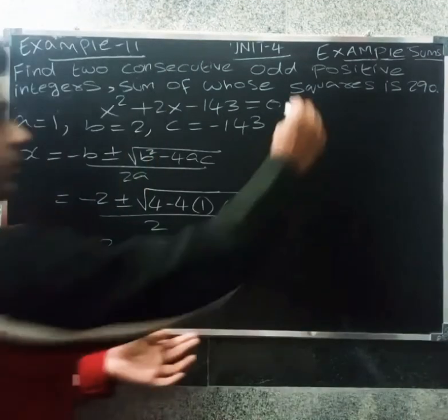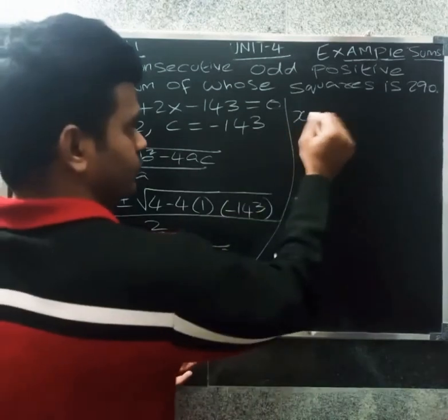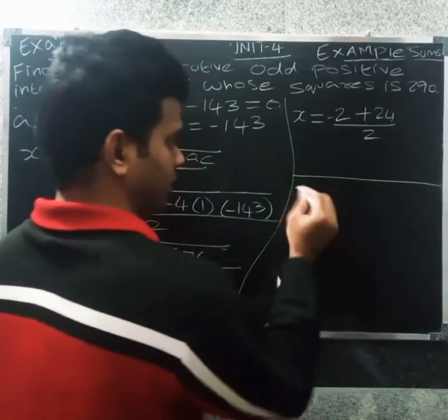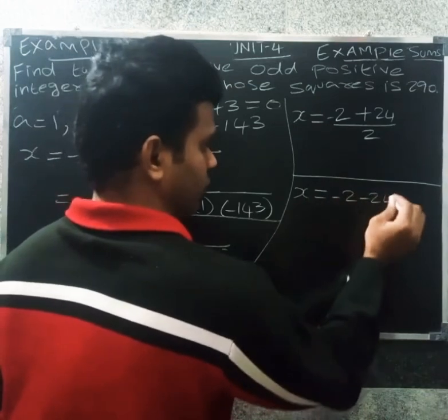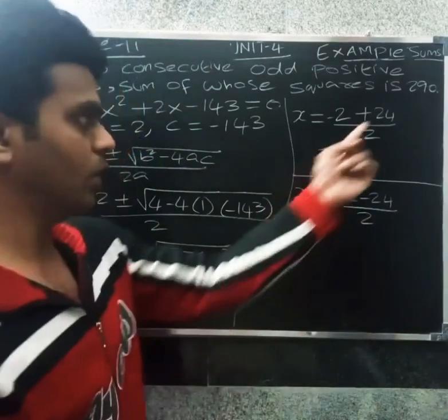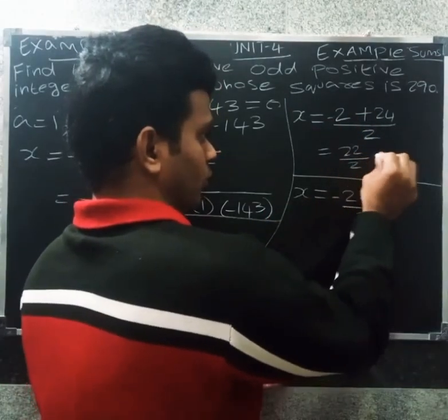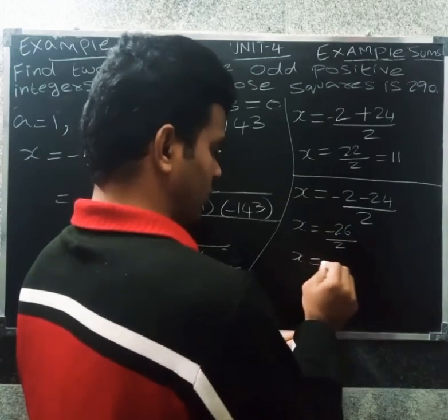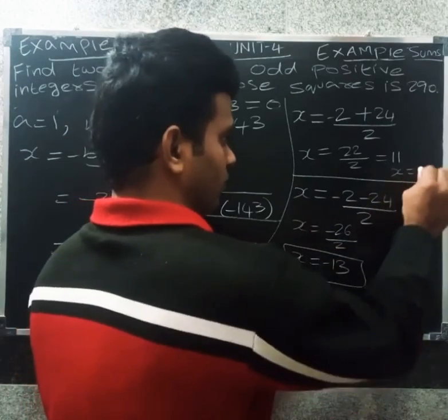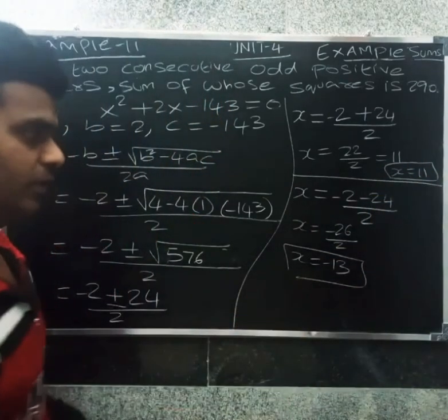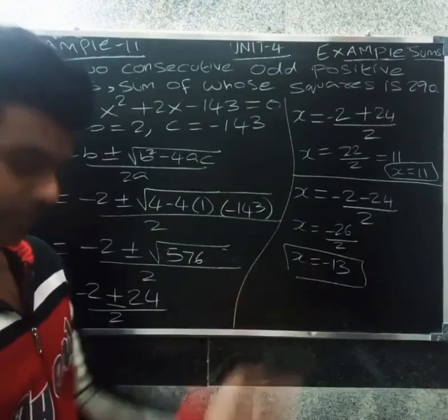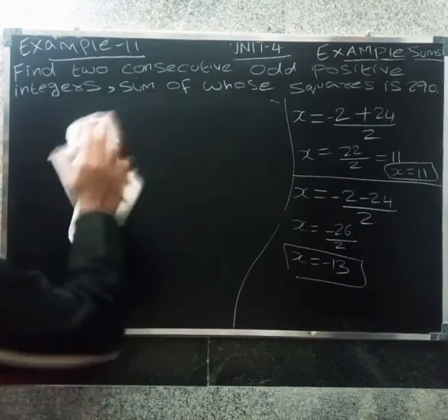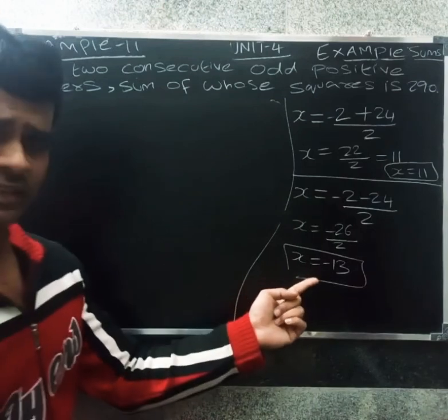So x equals minus 2 plus 24 divided by 2, or minus 2 minus 24 divided by 2. That gives x equals 11 or x equals minus 13. Since we need positive integers, x equals 11.